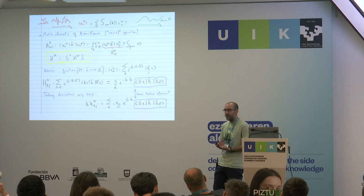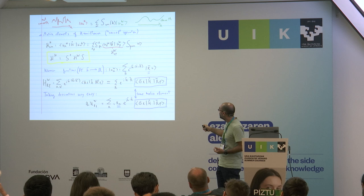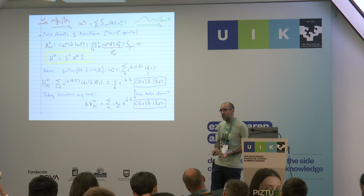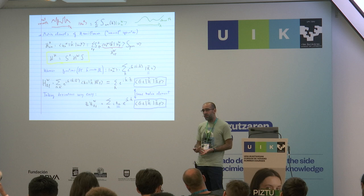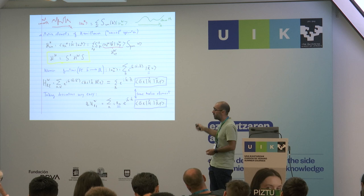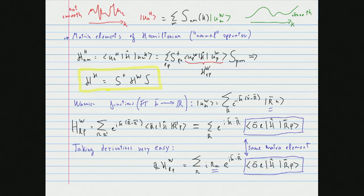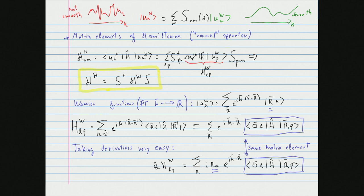The smoothness of the Wannier gauge Bloch functions comes from the localization of Wannier functions — a Fourier transform property: the more localized in real space, the smoother in k-space. This localization is achieved by minimizing the Marzari-Vanderbilt localization functional. Now let's look at the Hamiltonian matrix elements. In Hamiltonian gauge, you have the sandwich of your Hamiltonian between its eigenstates; in Wannier gauge, you apply rotation matrices S to go between them.